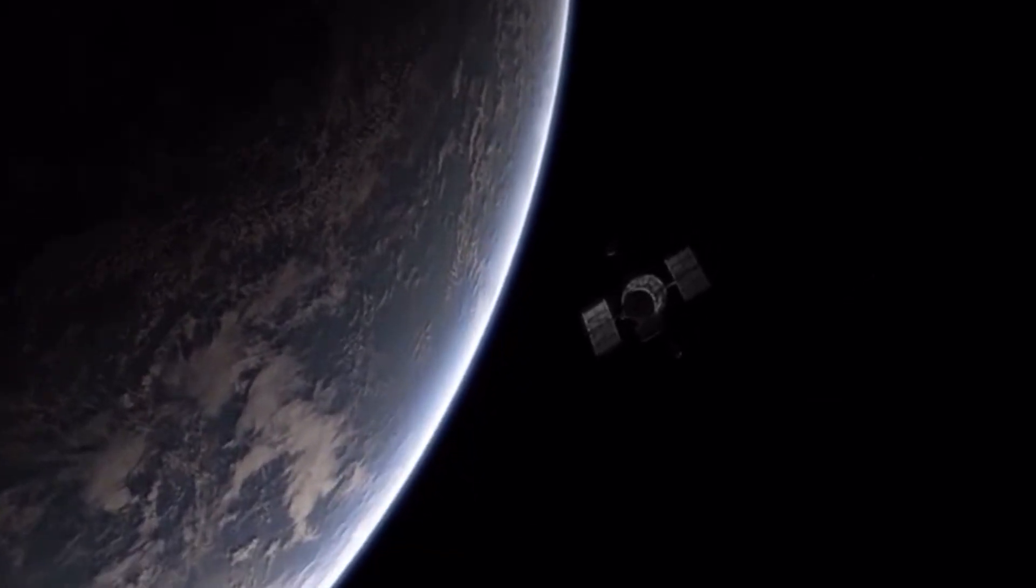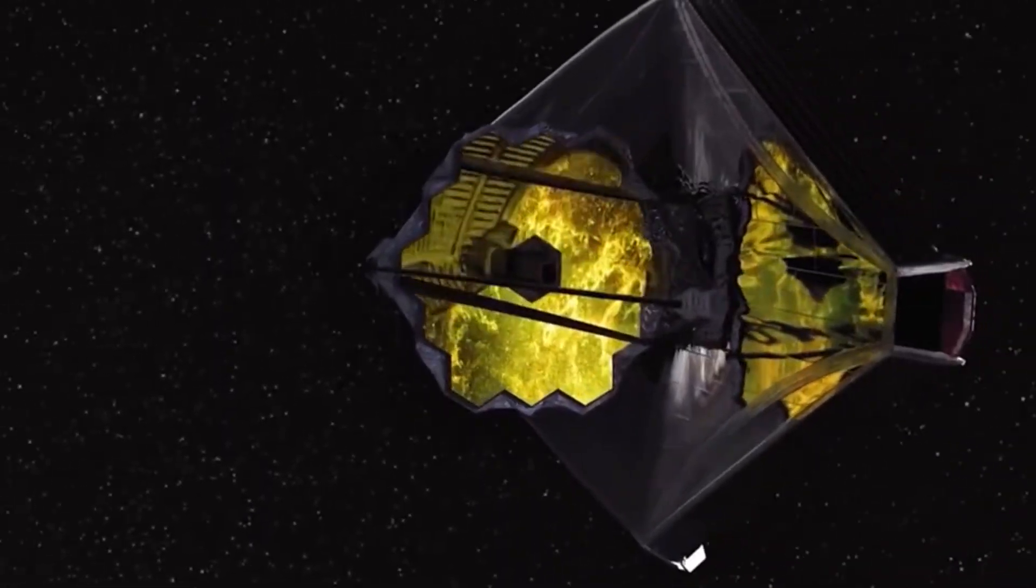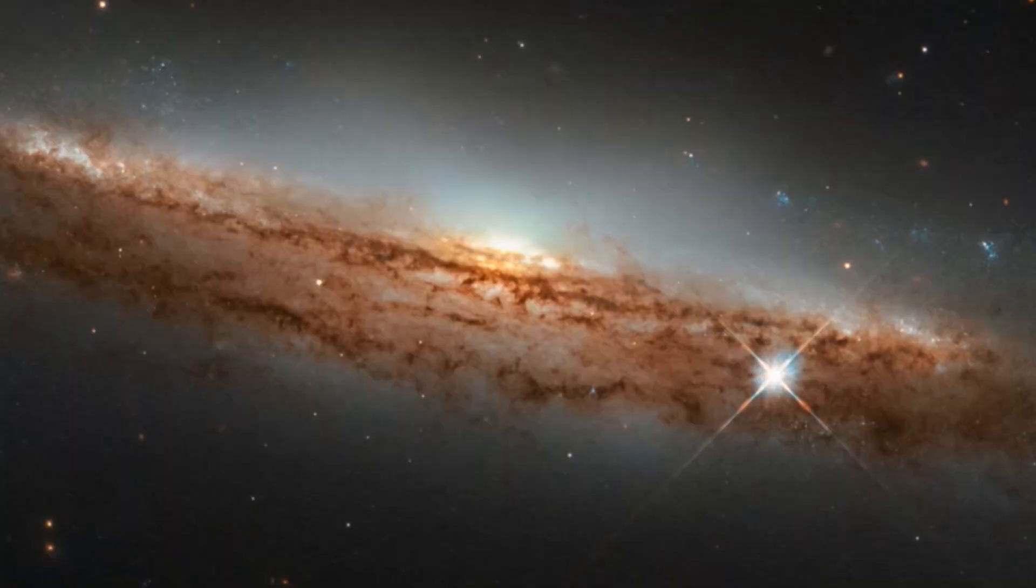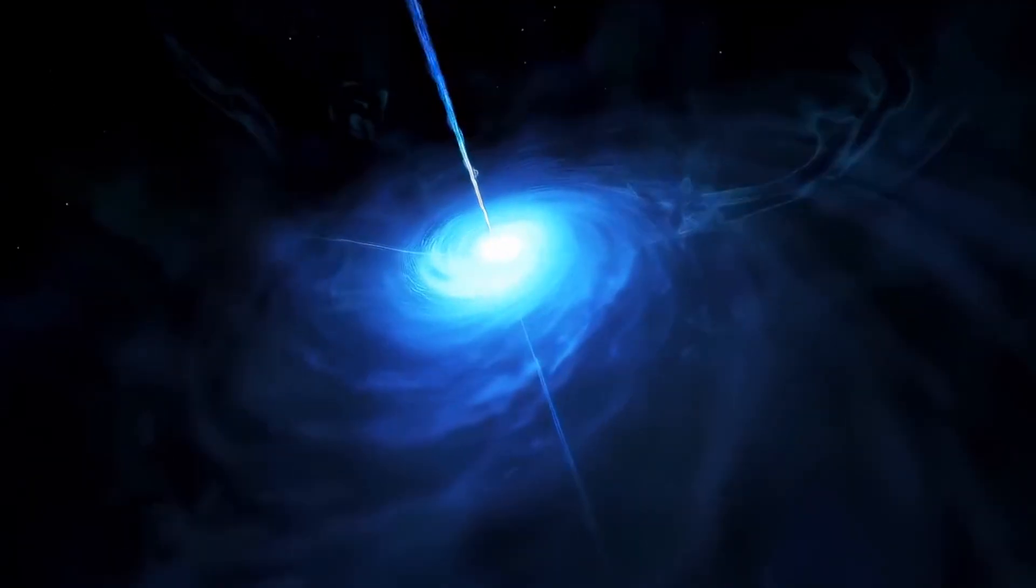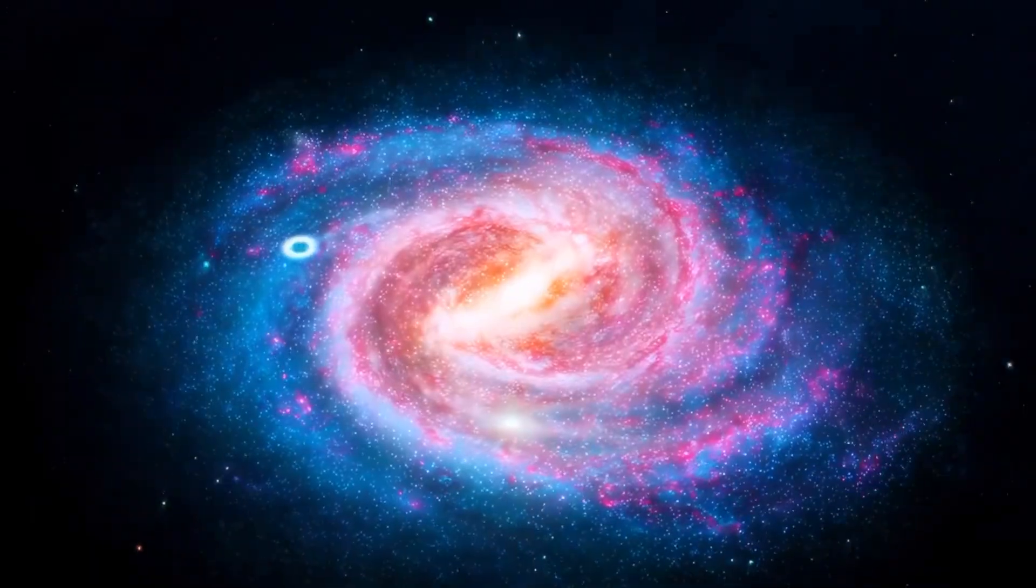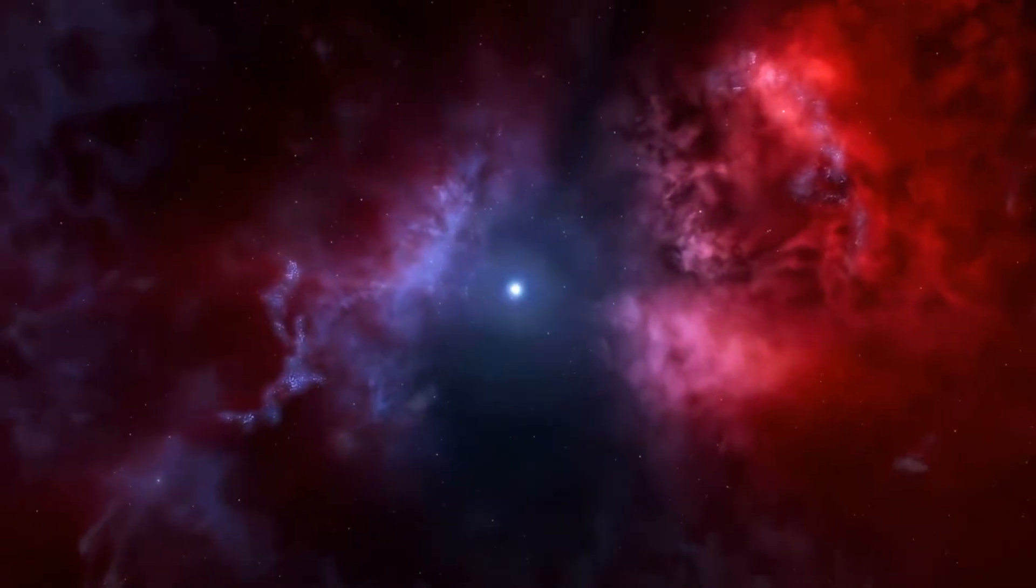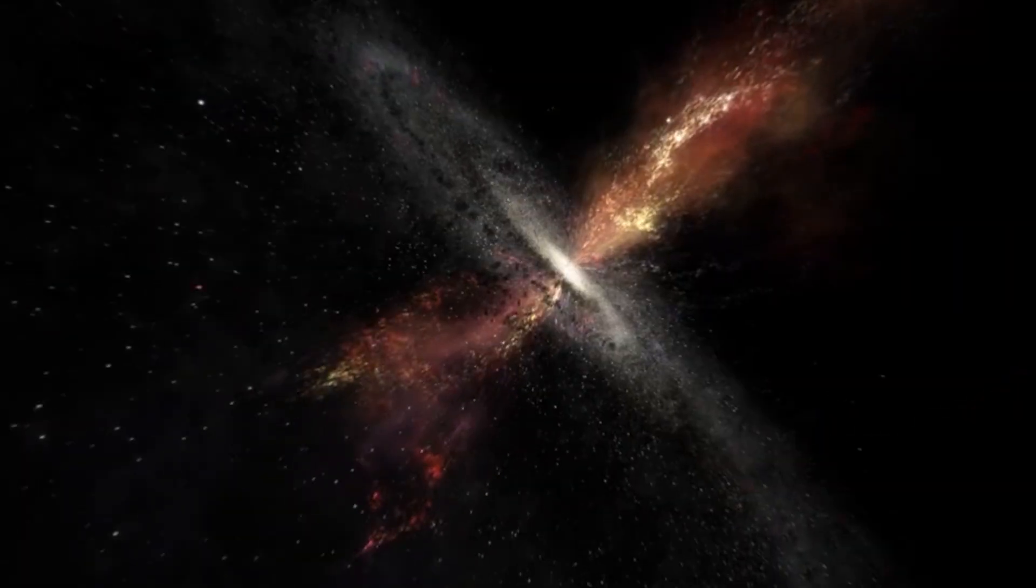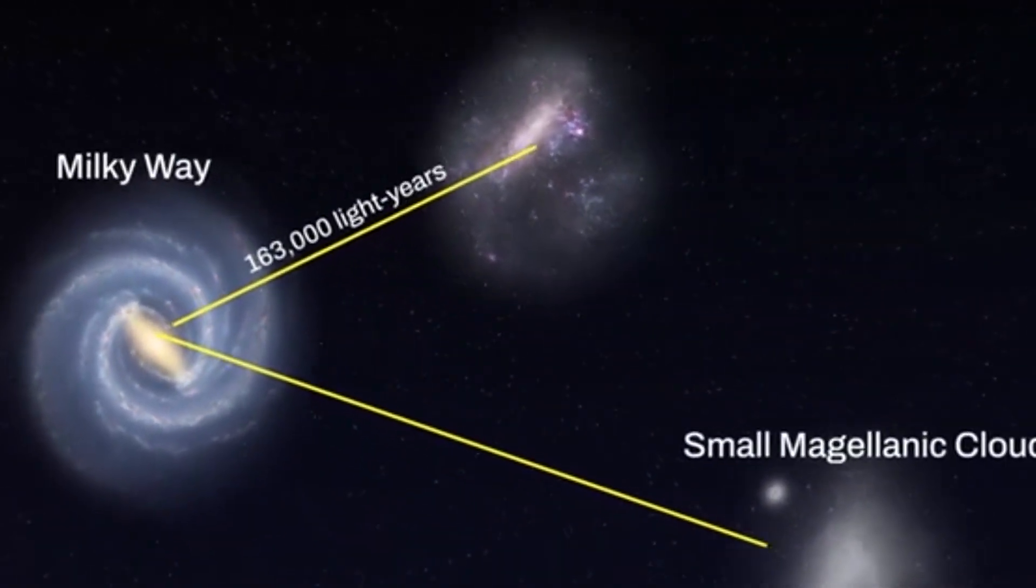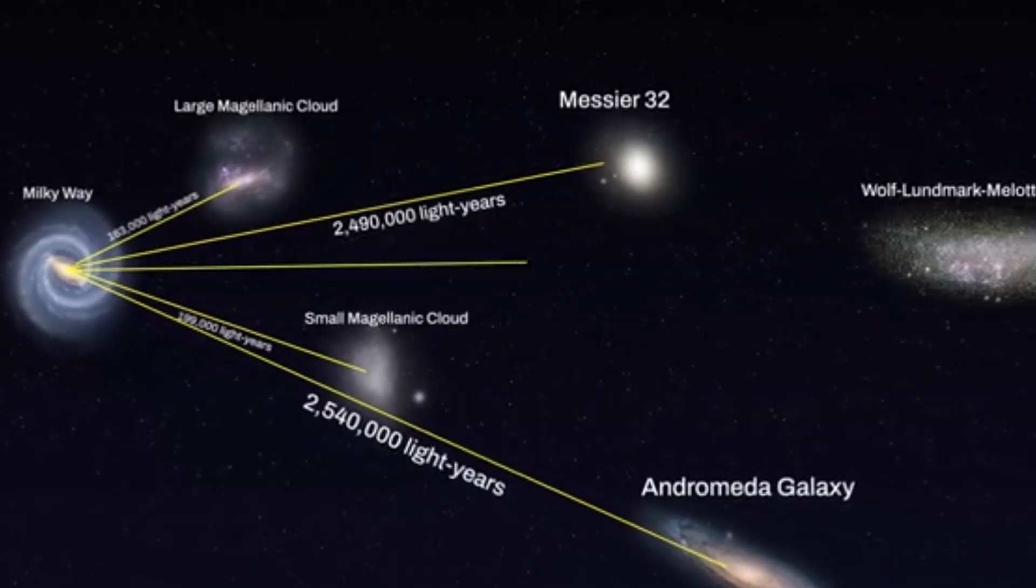We've seen individual stars in it. Modern telescopes like Hubble and JWST can resolve millions of stars in Andromeda, an incredible feat for a galaxy so far away. It glows in all wavelengths. From radio to X-rays, Andromeda emits energy across the entire electromagnetic spectrum, revealing star birth, black holes and cosmic dust. It's older than the Milky Way. Evidence suggests Andromeda formed earlier and had a more violent, merger-rich past.